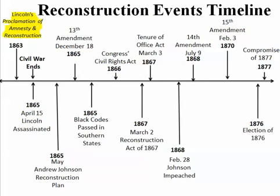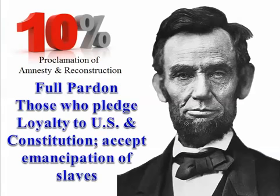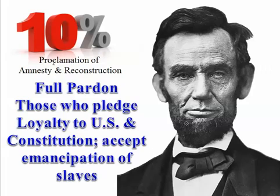Lincoln, in 1863, wrote a Proclamation of Amnesty and Reconstruction, in which he outlined his plans for Reconstruction in the United States after the Civil War ended. Many historians refer to this as the 10% Plan. We know this information by reading the Proclamation of Amnesty and Reconstruction. Abraham Lincoln offered a full pardon to those who pledged loyalty to the United States and the Constitution, and accepted the emancipation of slaves. When 10% of the states that seceded in 1860 pledged this pardon, they could come back into the Union.